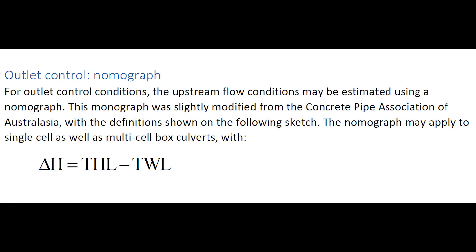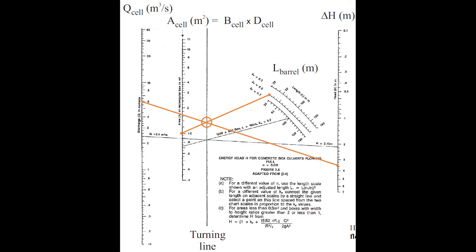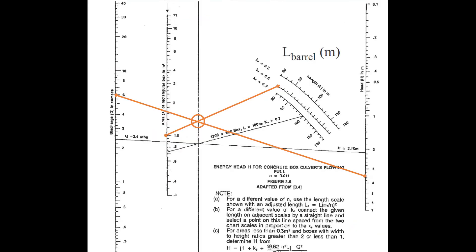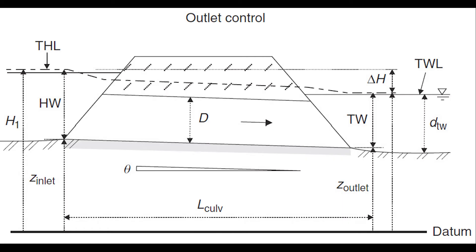For outlet control conditions, the upstream flow condition may be estimated using another nomograph. The nomograph may be applied to single cell as well as multicell box culverts, with the head loss being the difference between the headwater total head and the tailwater total head. This sketch shows a typical outlet control operation.